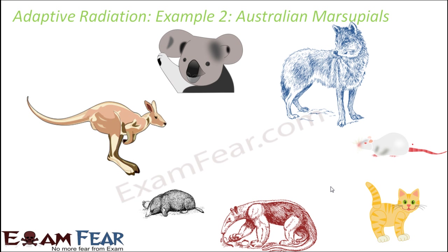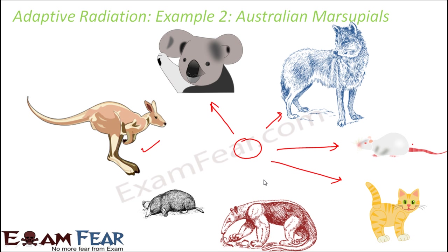It had even large animals like the marsupial kangaroo, which were large grazing animals. There were even marsupial lions, which were large predators. So this is how it all started from the marsupials and then radiated into so many different species. This is an example of adaptive radiation.